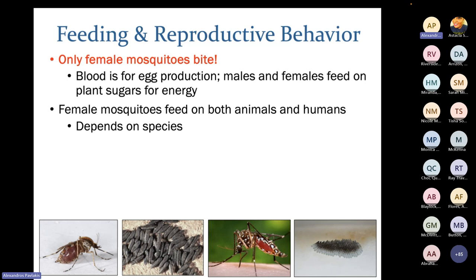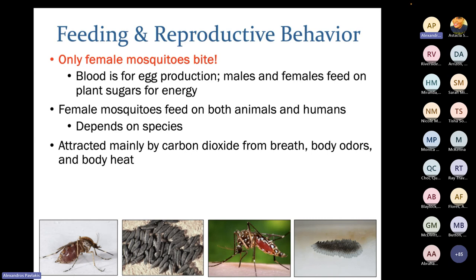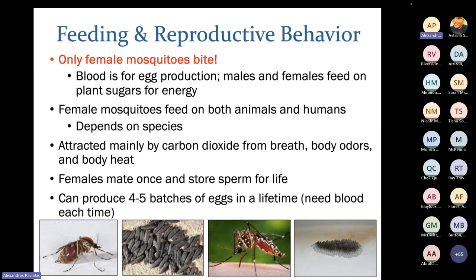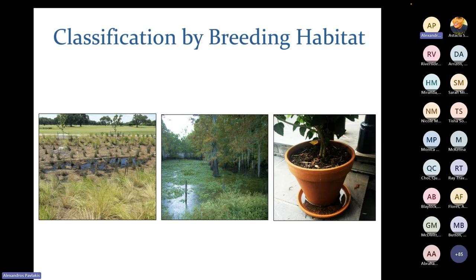The blood females take is for egg production — they need proteins to create their eggs. Both males and females feed on plant sugars for energy. Female mosquitoes will feed on animals or humans depending on the species and what's available. They're attracted to hosts mainly through carbon dioxide from breath, body odors, and body heat. Females mate once at the beginning of their life, store that sperm for life, and take subsequent blood meals — up to four or five batches of eggs — each time they want to produce eggs.